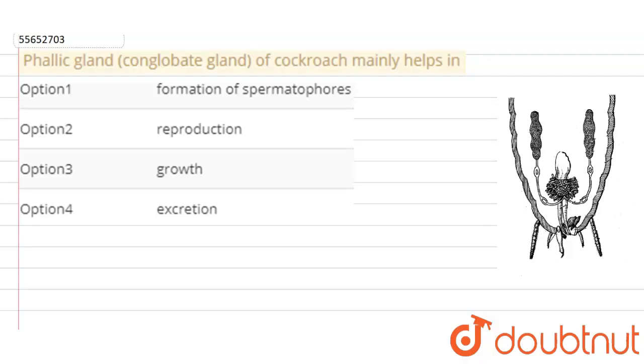We have been asked: in cockroach, what does the phallic gland or conglomerate gland mainly function in from the given options?